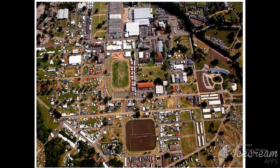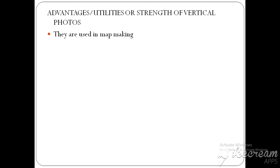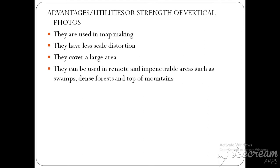The advantages of vertical photographs: first, they are used in map-making — unlike horizontal photographs which are used in field sketching. They have less scale distortion, and they cover a large area unlike horizontal photographs. They can also be used in remote and impenetrable areas such as swamps, dense forest, and mountain tops — areas we cannot physically reach to take photographs.